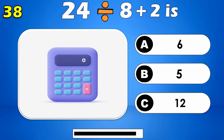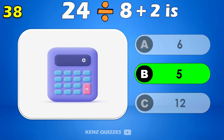24 divided by 8 plus 2 is — the answer is five.